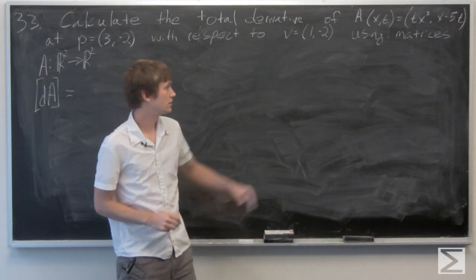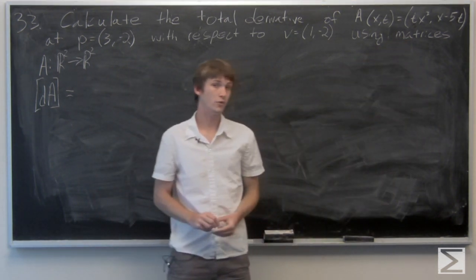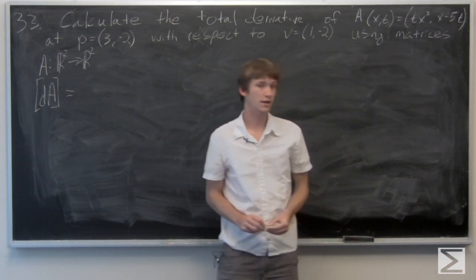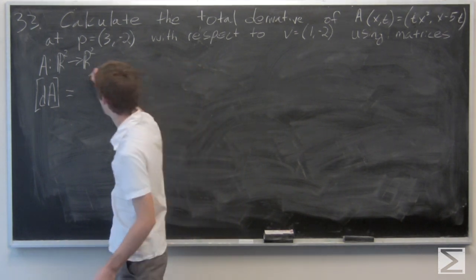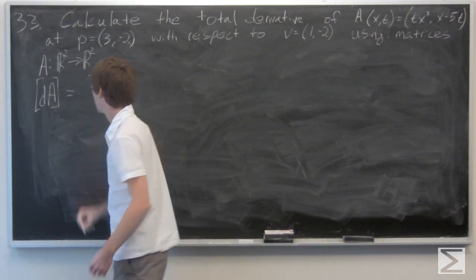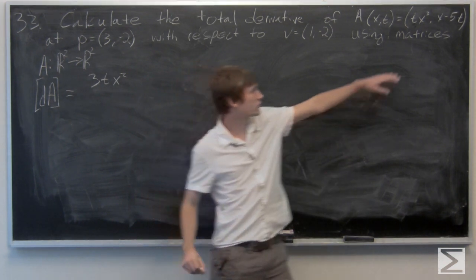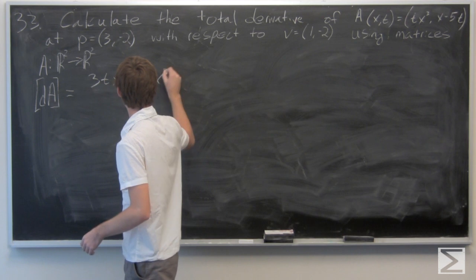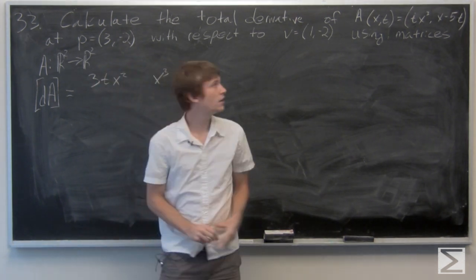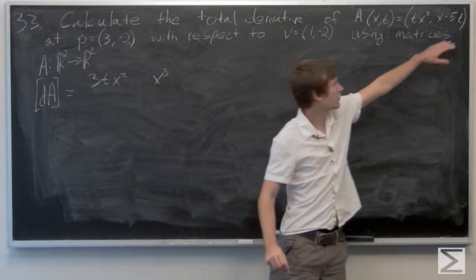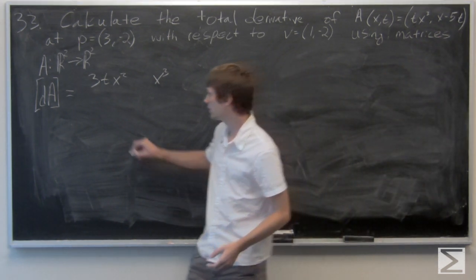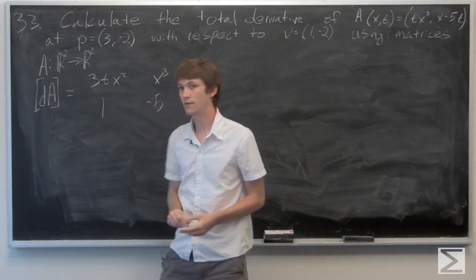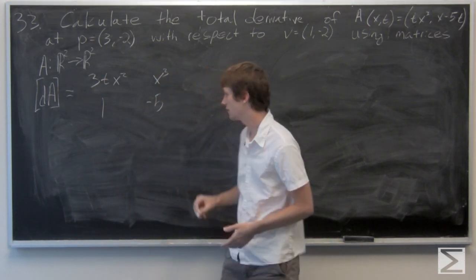We take the partial derivative of the first component with respect to x, and we get 3t·x². And we take the partial derivative of t·x³ with respect to t, and we get x³. Then we take the partial derivative of the second component with respect to x, and that's just 1. And the partial derivative of the second component with respect to t is negative 5.